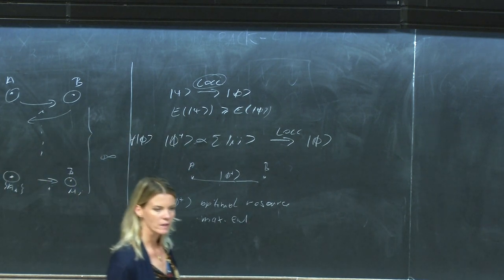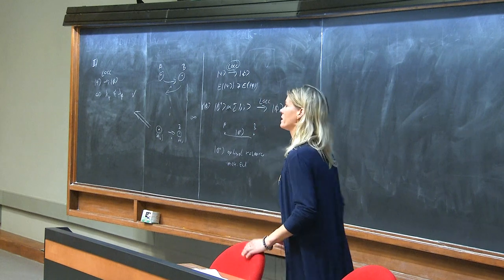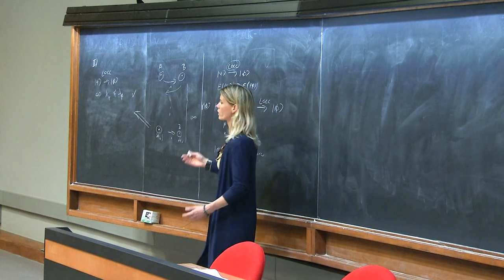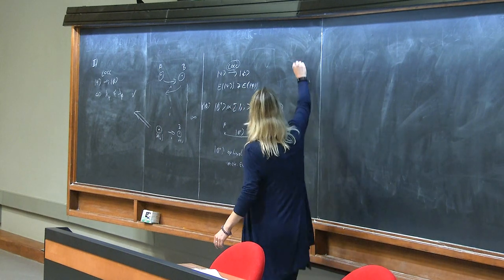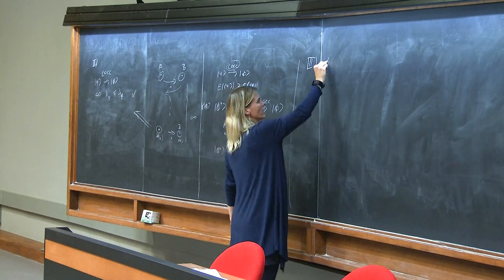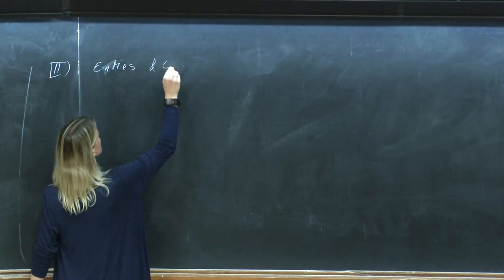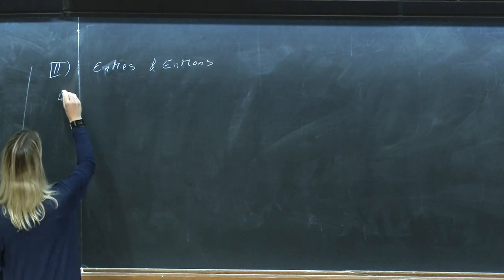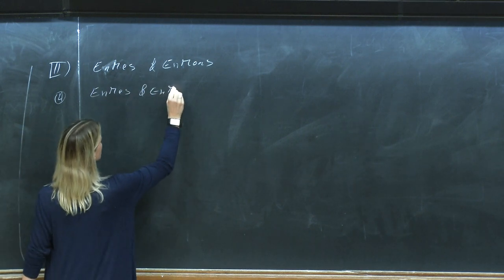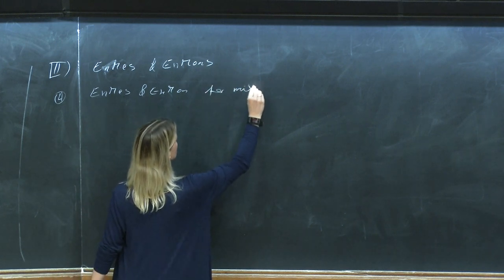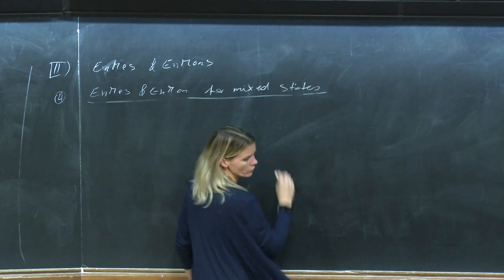So the Phi+ state is really the optimal resource — or, if you wish, it's the maximally entangled state. I'm saying 'the maximally entangled states' because what I actually do is consider LU equivalence classes. By Phi+ I mean any state that is LU equivalent to Phi+, because LU equivalence doesn't change any entanglement. So this is the optimal state. Now how can we measure it? This was our chapter three: entanglement measures and monotones.